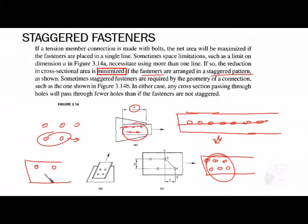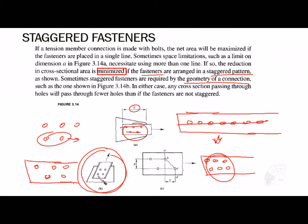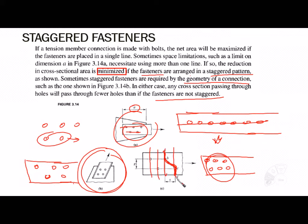Sometimes staggered fasteners are required by the geometry of the connection and we have no control over it. In either case, any cross section passing through holes will pass through fewer holes when the fasteners are staggered, so the net area is larger than if we took the same straight line.